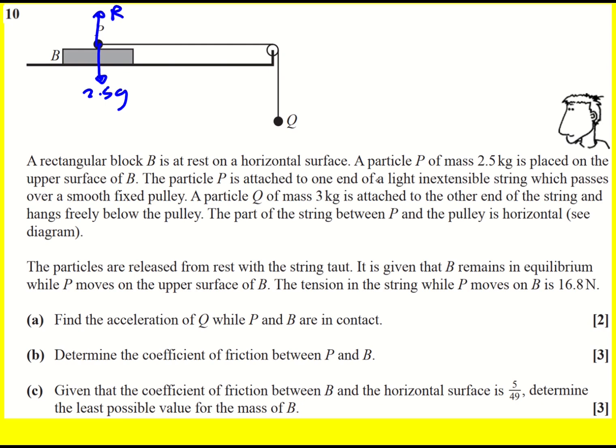And then P is attached to one end of a light inextensible string which passes over a smooth fixed pulley and acts onto Q. So Q is going to be trying to pull P to the right. There's going to be a tension therefore acting to the right. And then for Q it has its weight acting down. No normal reaction because it's suspended in midair but there will be a tension acting up because P is trying to stop it from falling down. Those are all the forces at present.